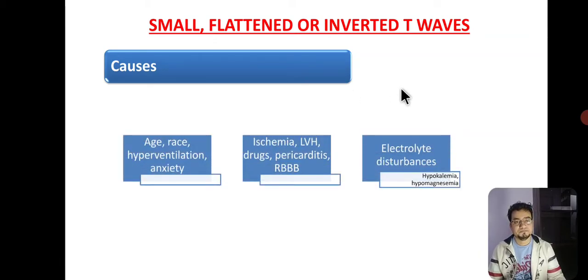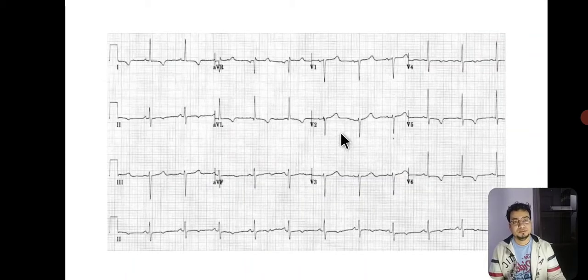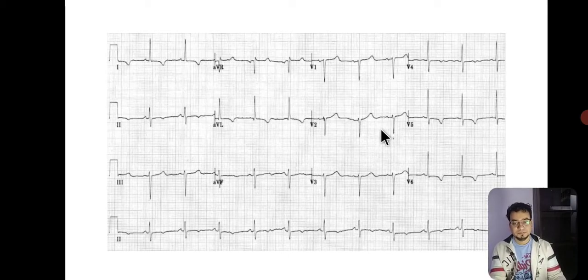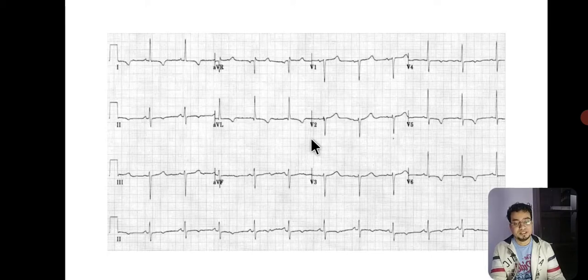Small, flattened, or inverted T waves can be caused by physiological issues such as age, race, hyperventilation, and anxiety; ischemic conditions; drugs; hypokalemia; and hypomagnesemia. T wave inversion may be considered evidence of myocardial ischemia when it is at least 1 mm deep, present in two contiguous leads with dominant R waves, and dynamic — not present on older ECGs and changing over time — disappearing once the underlying abnormality, such as hypokalemia, is corrected.